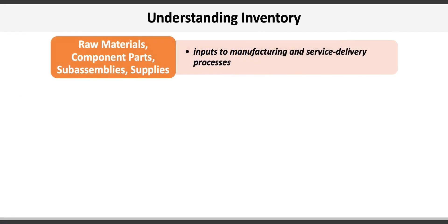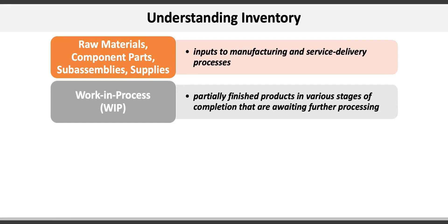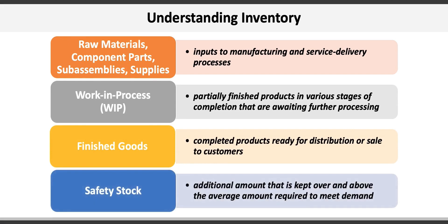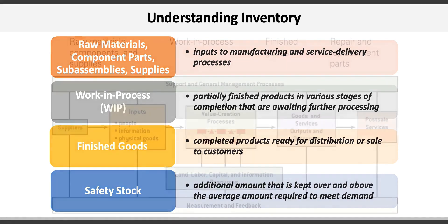The first type is raw materials, components, sub-assemblies, and supplies, which are inputs to manufacturing and service delivery processes. Then there's work-in-process, or WIP, which consists of partially finished goods in various stages of production. There's finished goods inventory — completed products ready for distribution or sale to customers — and finally, safety stock: additional inventory amounts kept over and above the average amount required to meet demand.